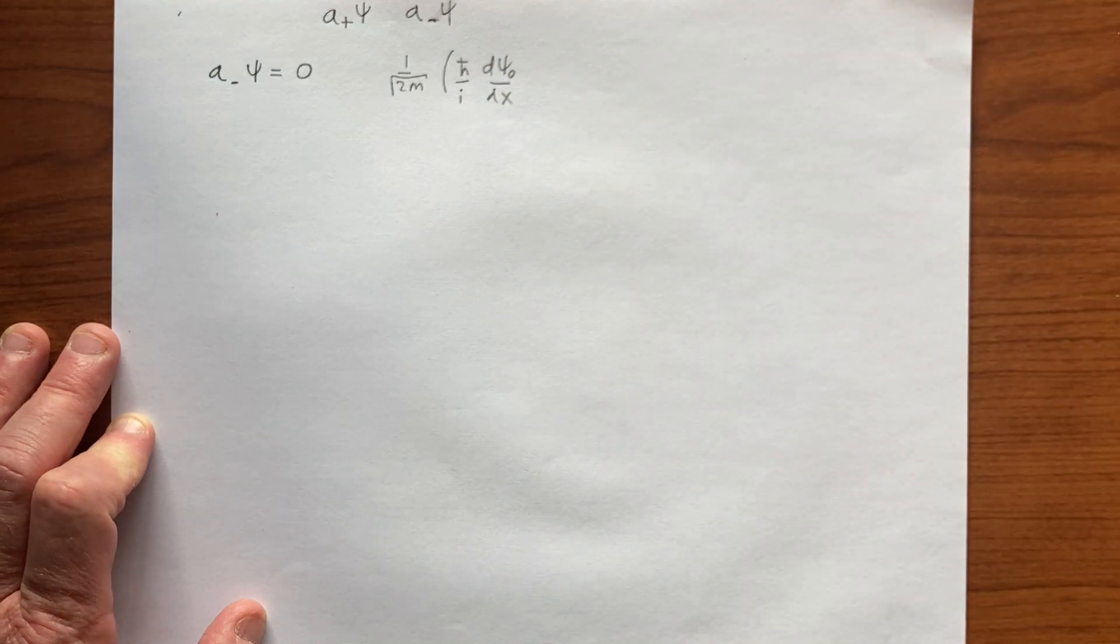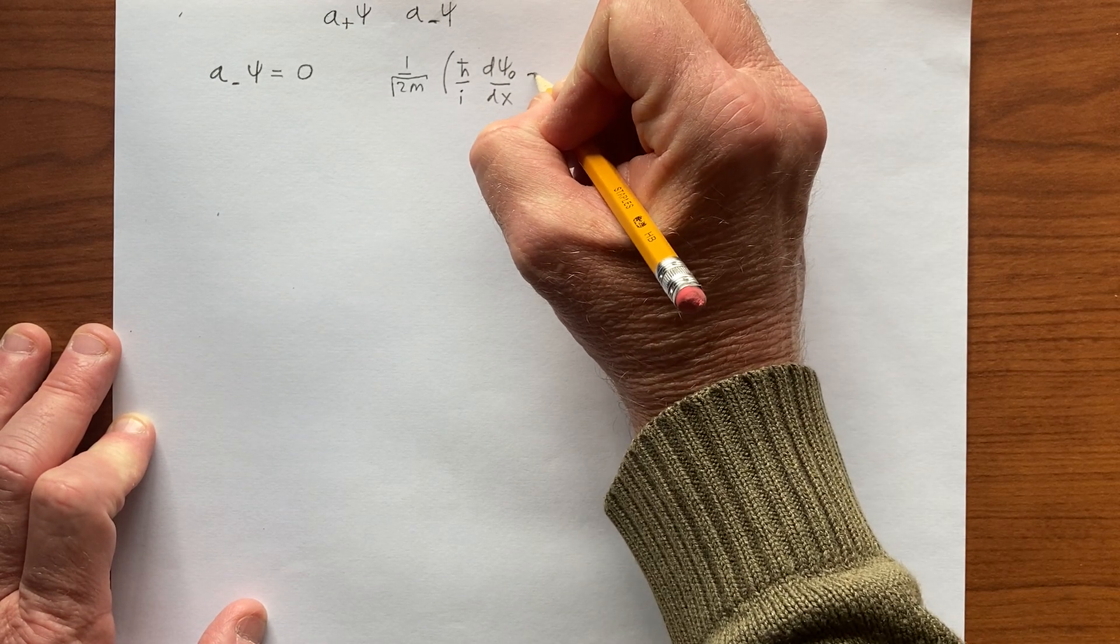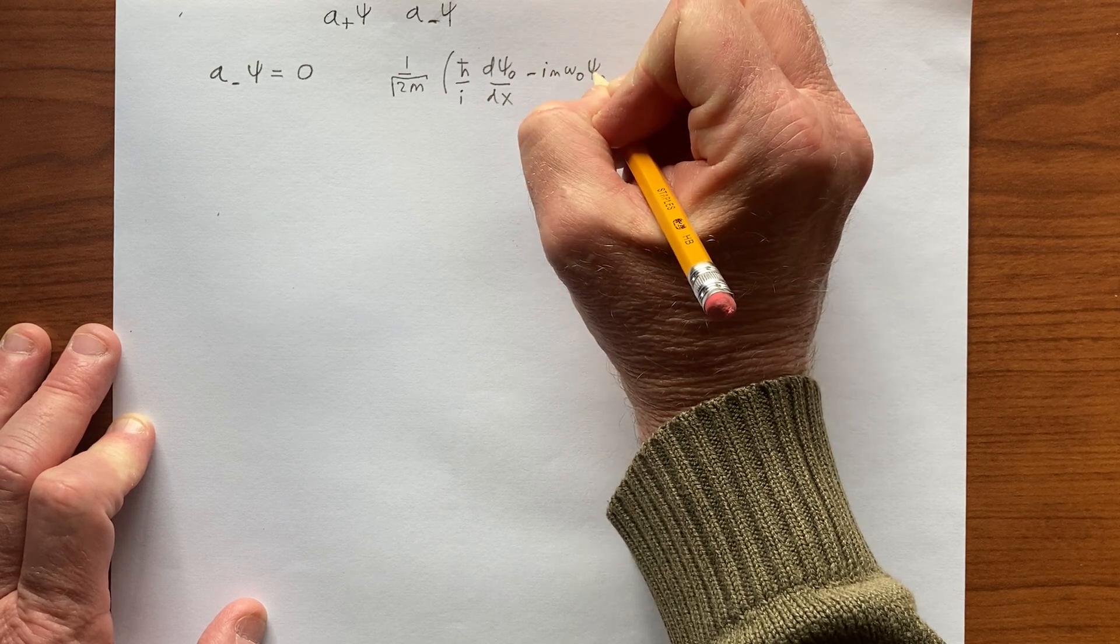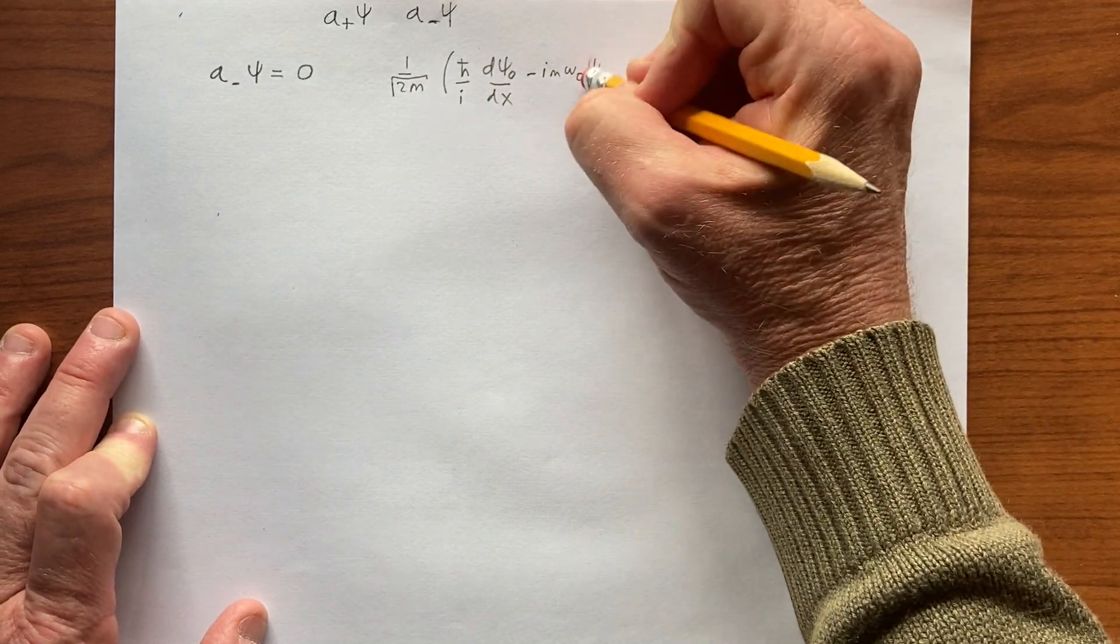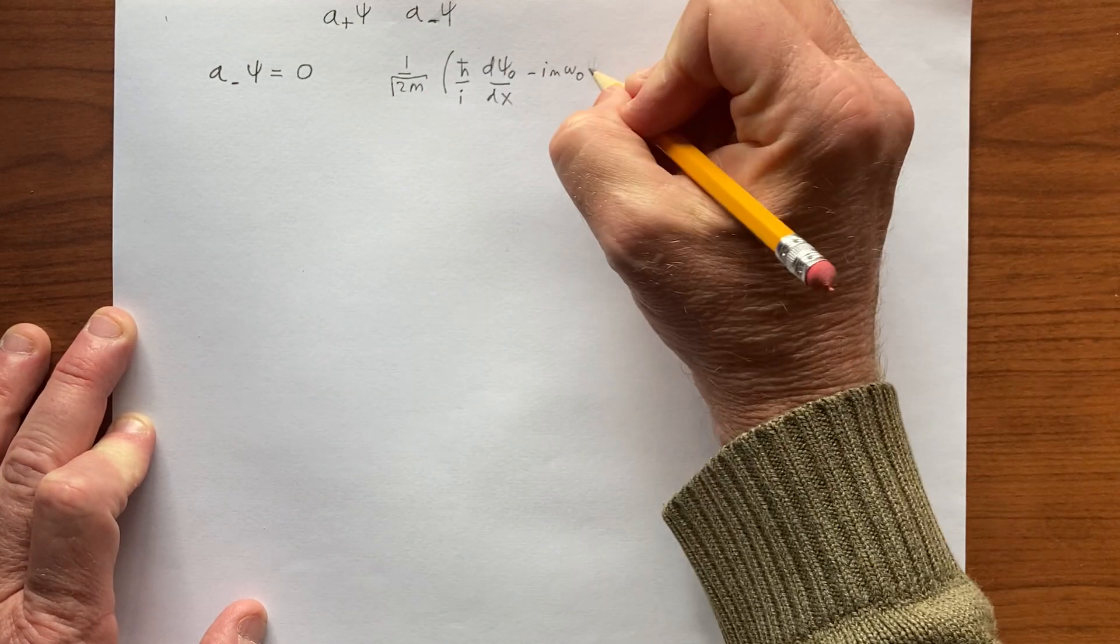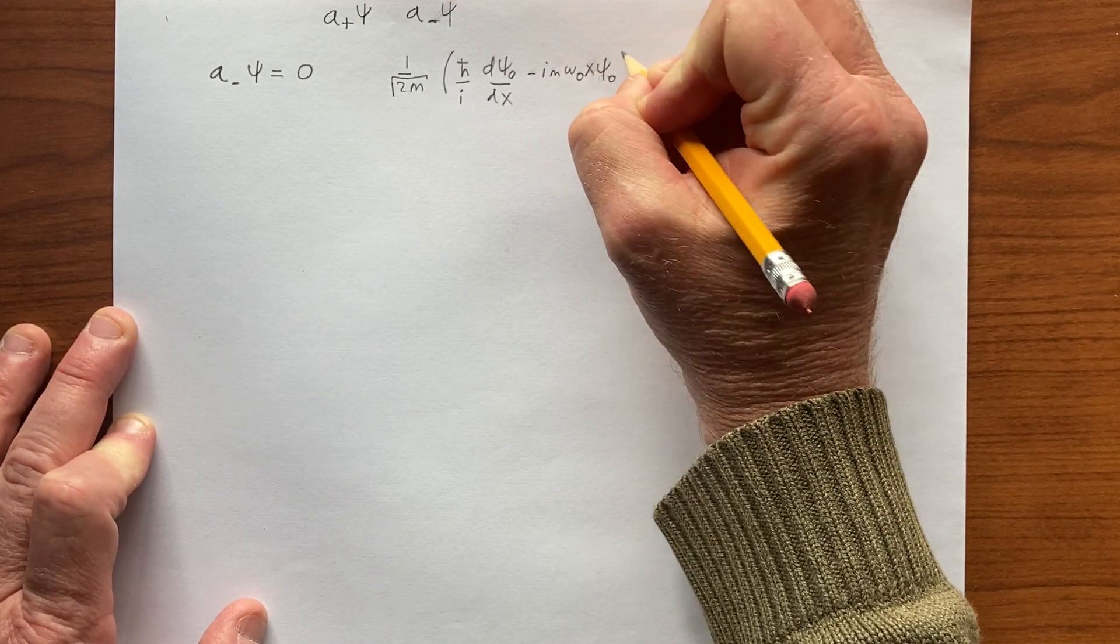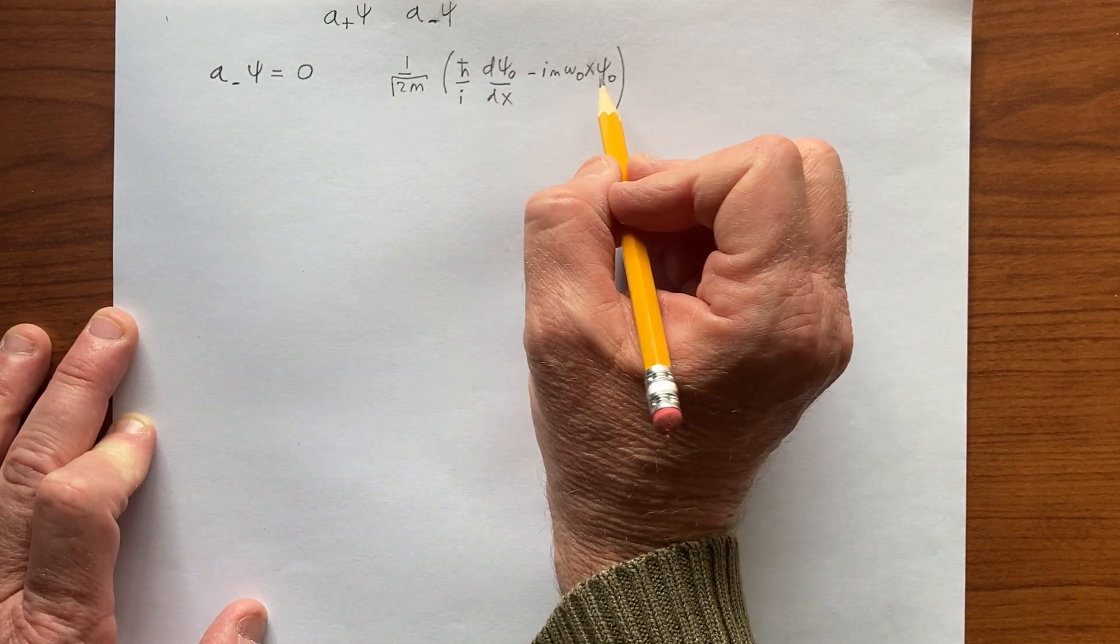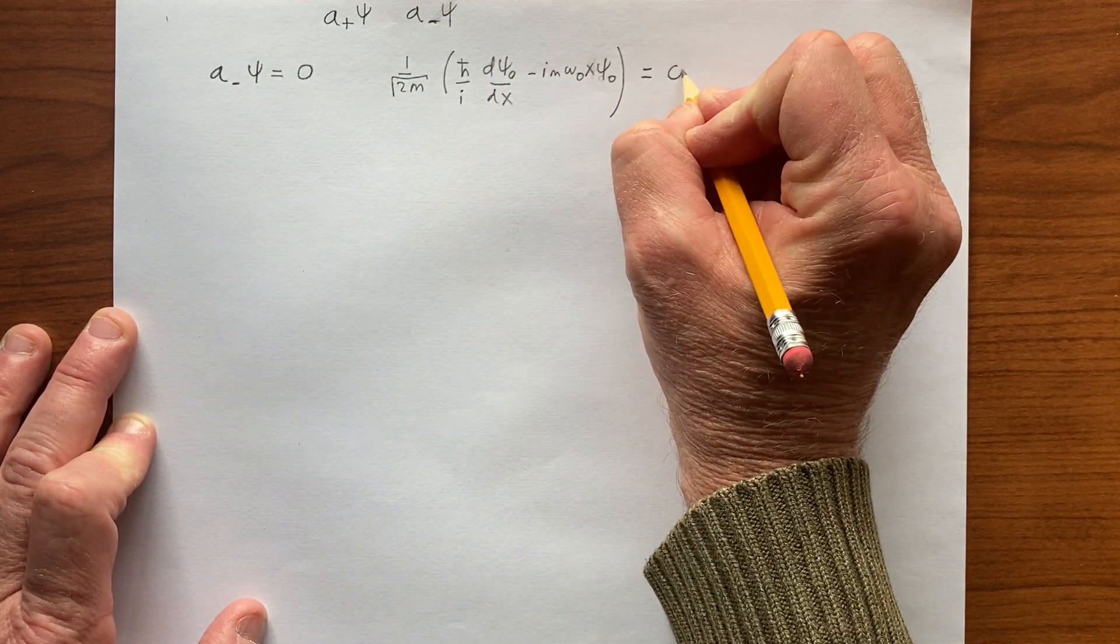Let's call it ψ₀, because that represents the lowest energy state. So i, m, ω₀, ψ₀. I'm sorry, I need the x in here, so I have x ψ₀, and that's what A minus on ψ₀ looks like, and that has to be equal to zero.